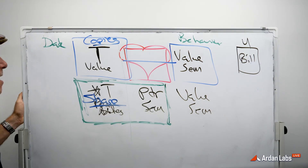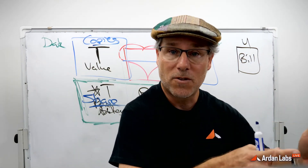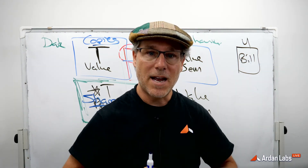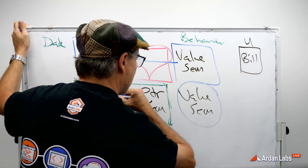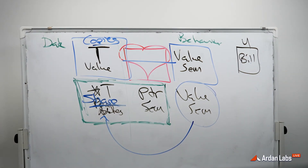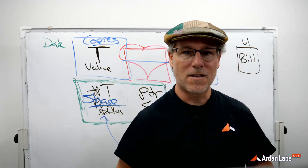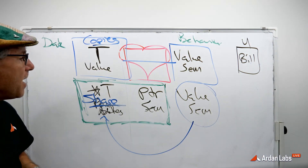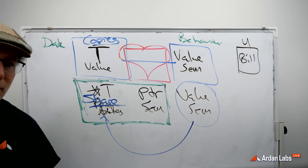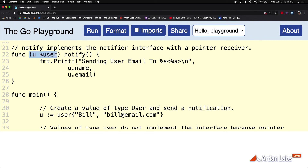There are times where you're in value semantic mode and you might need to switch to pointer semantics — we saw that with decoding and unmarshalling. Once you switch into pointer semantic mode, you're locked in until you come back out of that call chain. This chart is also saying there are times when in value semantic mode you might have to take that share exception. It's amazing what the method set rules are doing — and this is over a decade old.